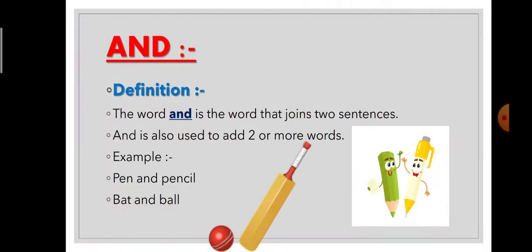The word is AND. What is the definition? What is AND? The word AND is the word that joins two sentences. If we want to join two sentences, then we add AND in those sentences. AND is the word that joins two sentences.